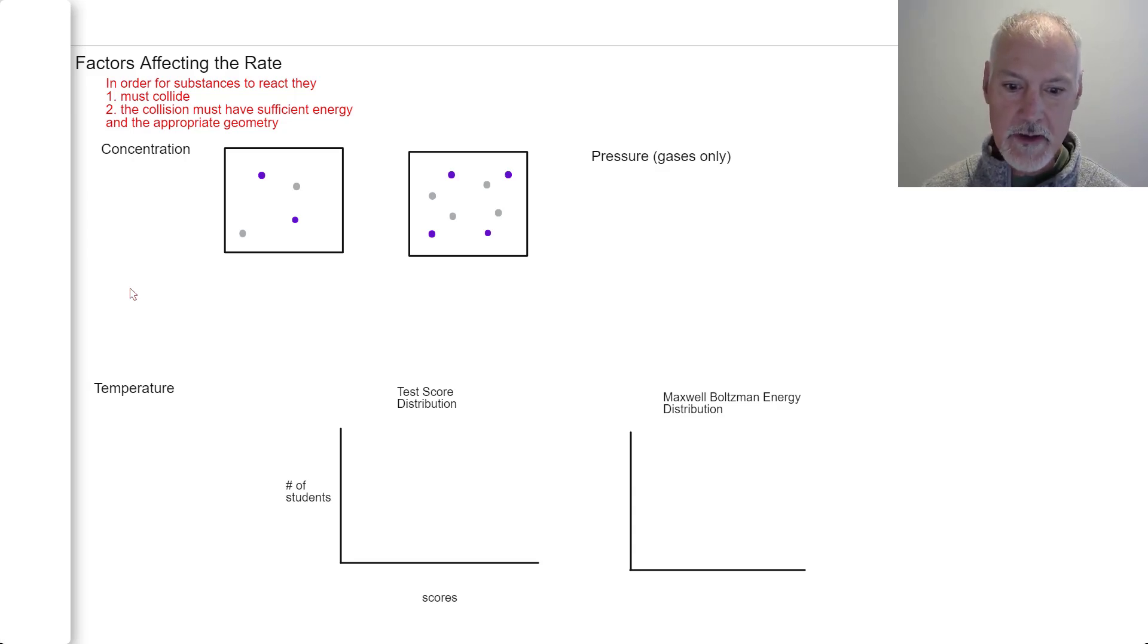Let's start by taking a look at what effect concentration has on the rate of a reaction. Here I have an example of something which has a low concentration of reactants, and here a high concentration. In a high concentration, the distance between the particles is less. That leads to more frequent collisions and meets the first criteria of our collision theory. So if our concentration increases, we end up with more frequent collisions.